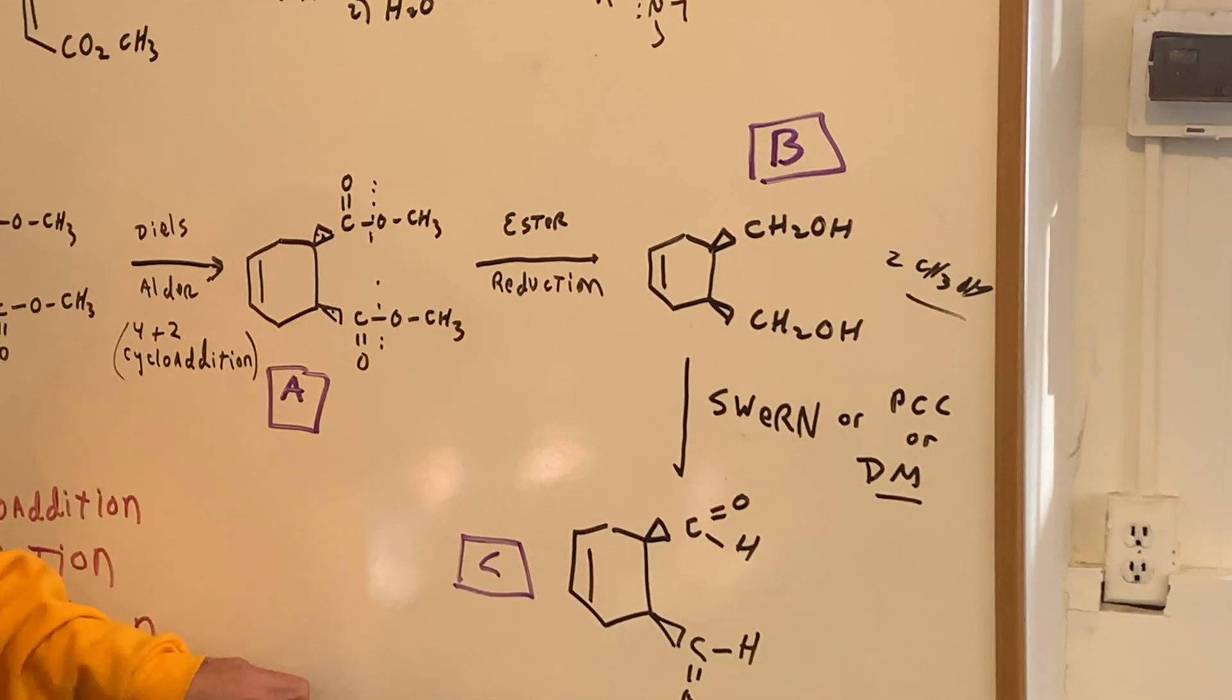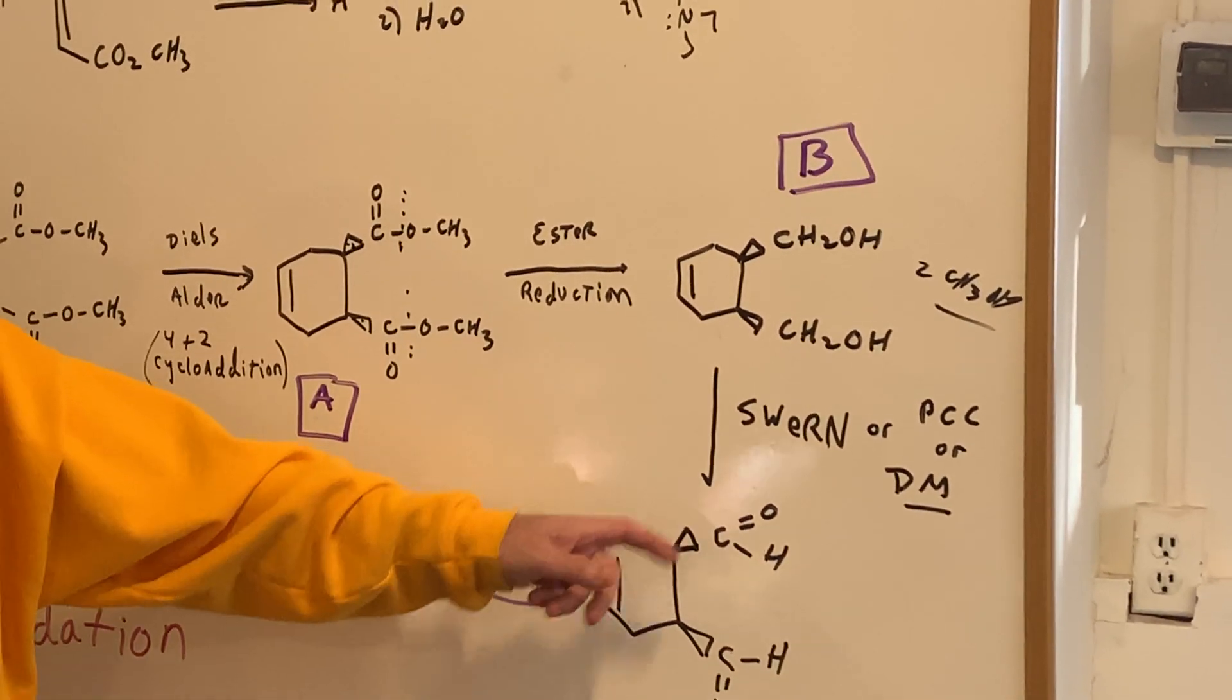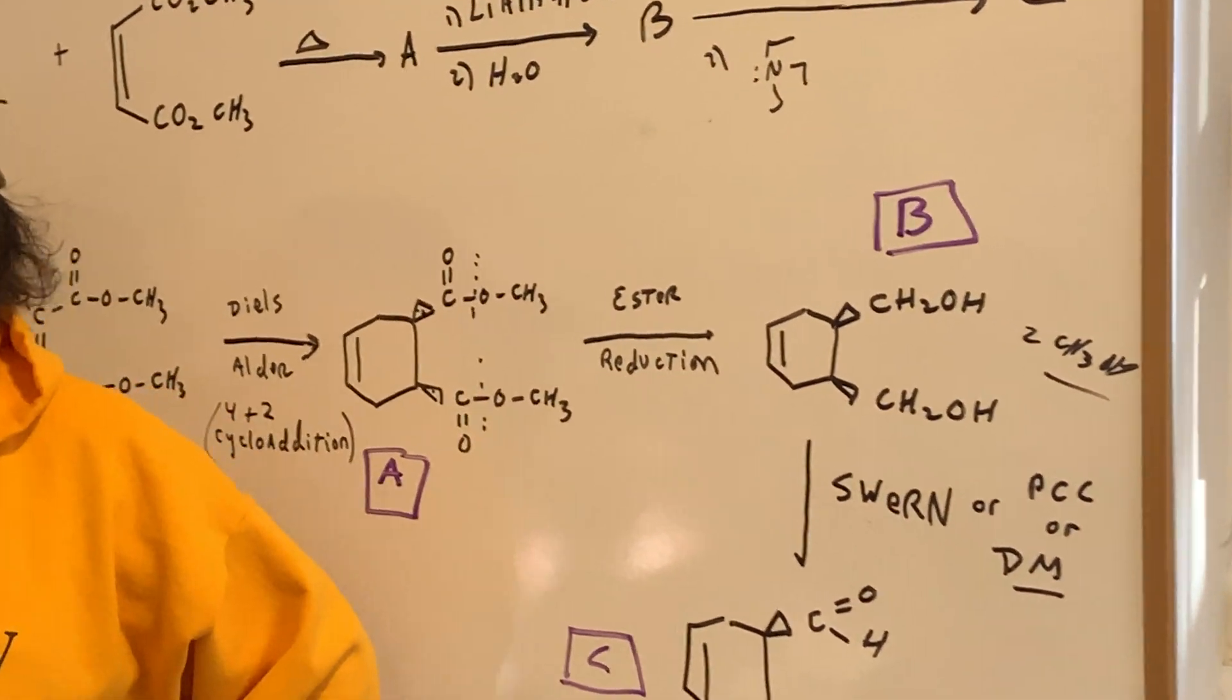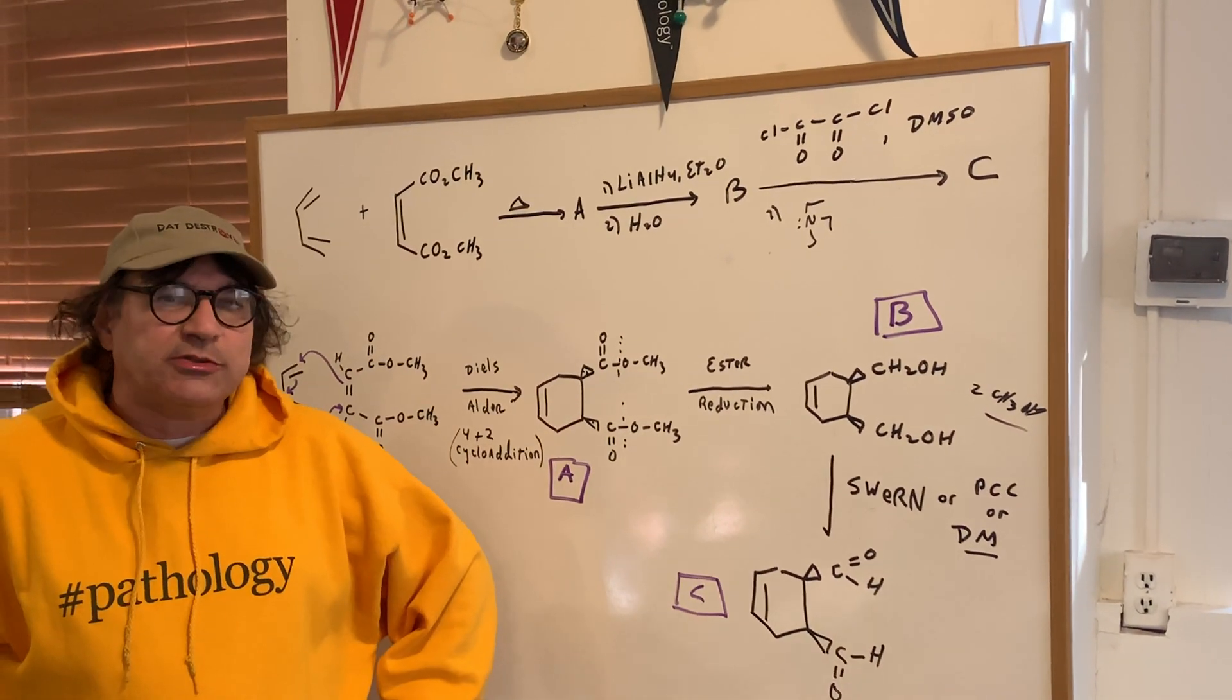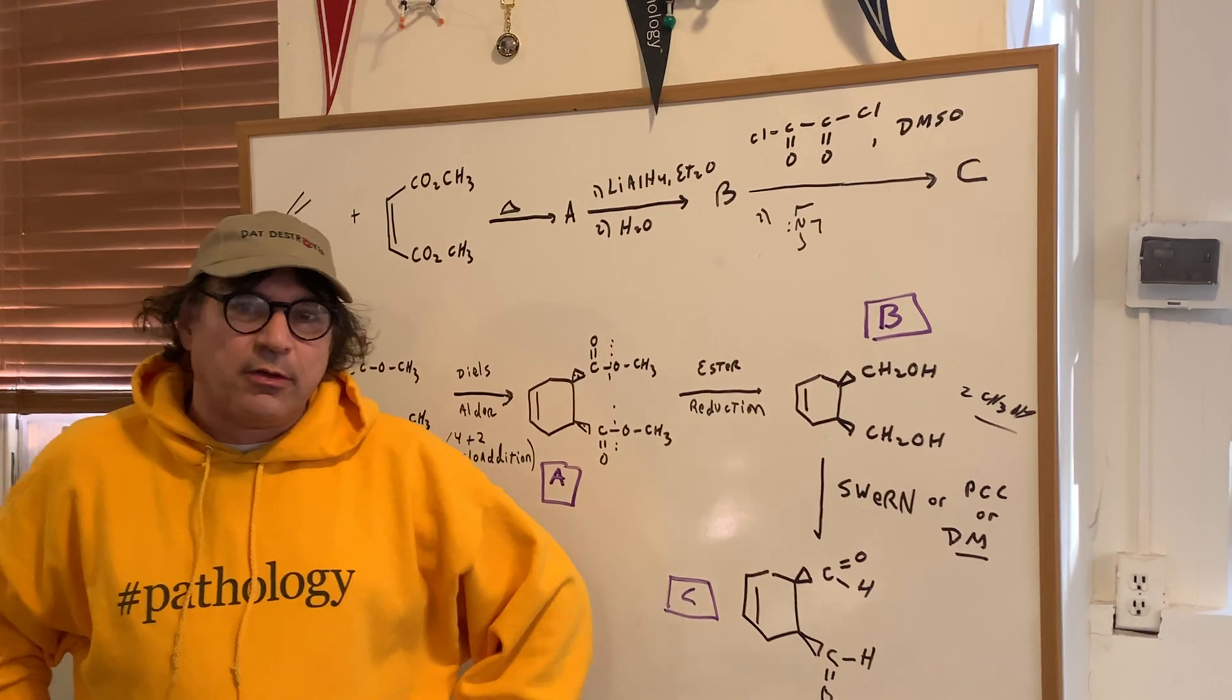So the final product would be this cyclohexene dicarbaldehyde. All right. I hope that gives you a good understanding of a type of question you'll see on the DAT exam. All right. Bye-bye.